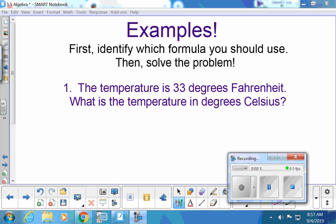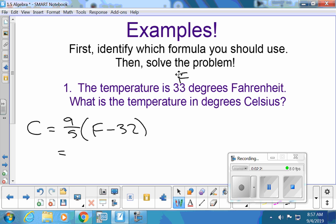Our first one is a temperature problem. The temperature is 33 degrees Fahrenheit. So that's going to be an F number. We want to convert it to Celsius. So we'll use that new formula that I just put on the board today. And we'll be plugging that 33 in for F. So it will be 9 over 5 times 33 minus 32. I normally get my answer like in a decimal.